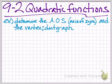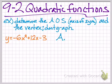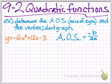So the first thing we're going to do here is find the axis of symmetry of our quadratic function, which is negative 6x squared plus 12x minus 3. To find the axis of symmetry, you need to use that formula from the previous lesson, negative b over 2a.